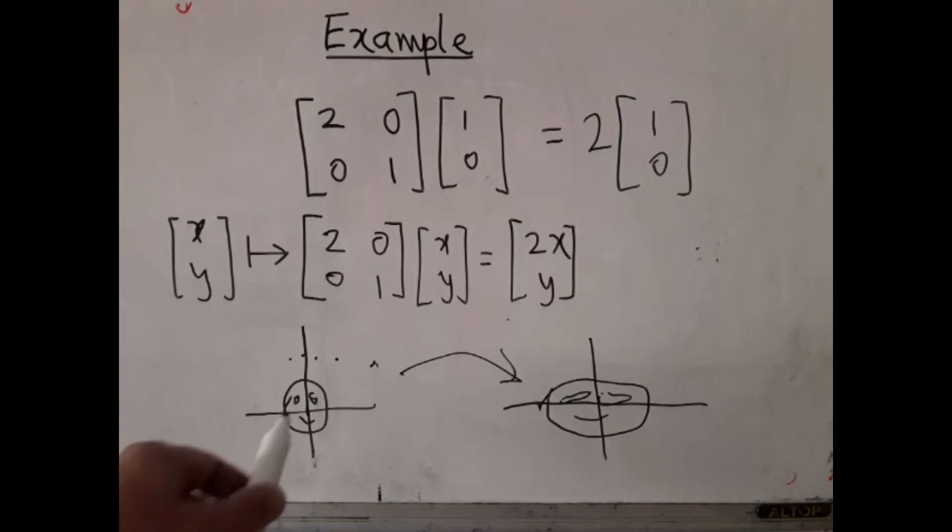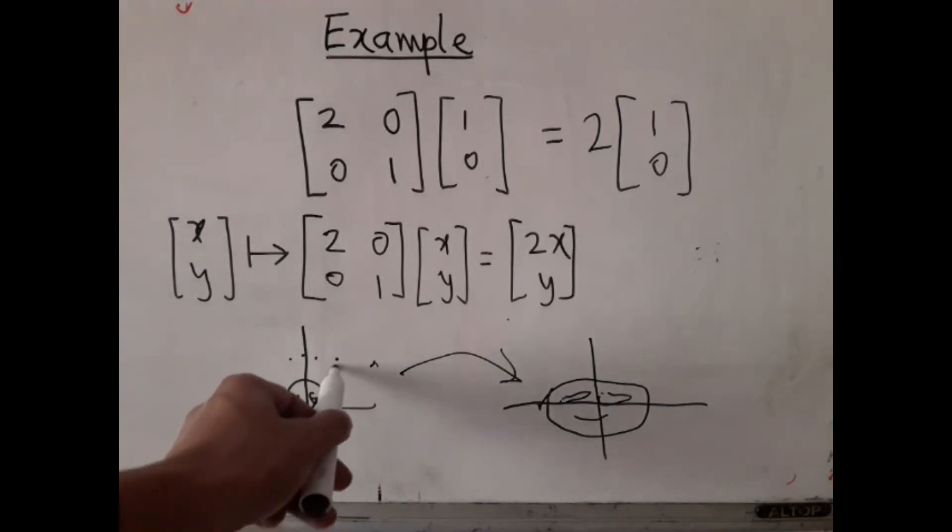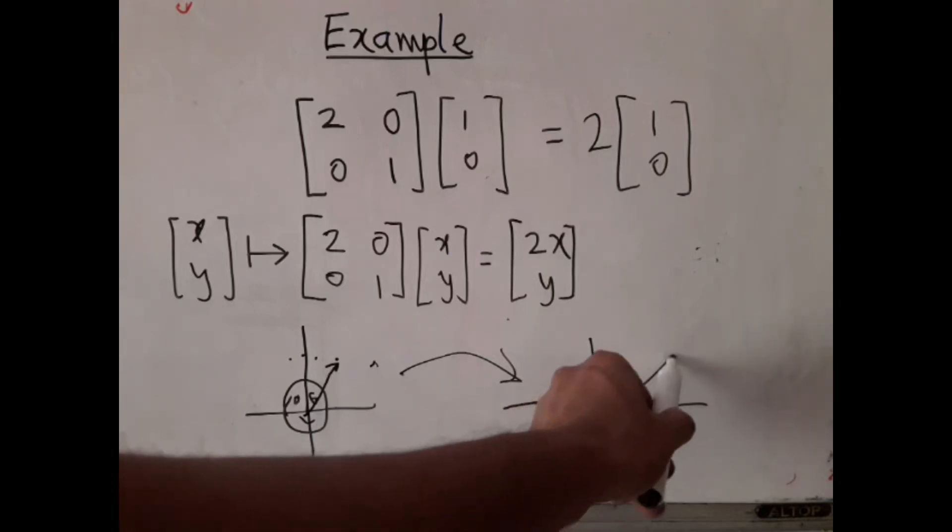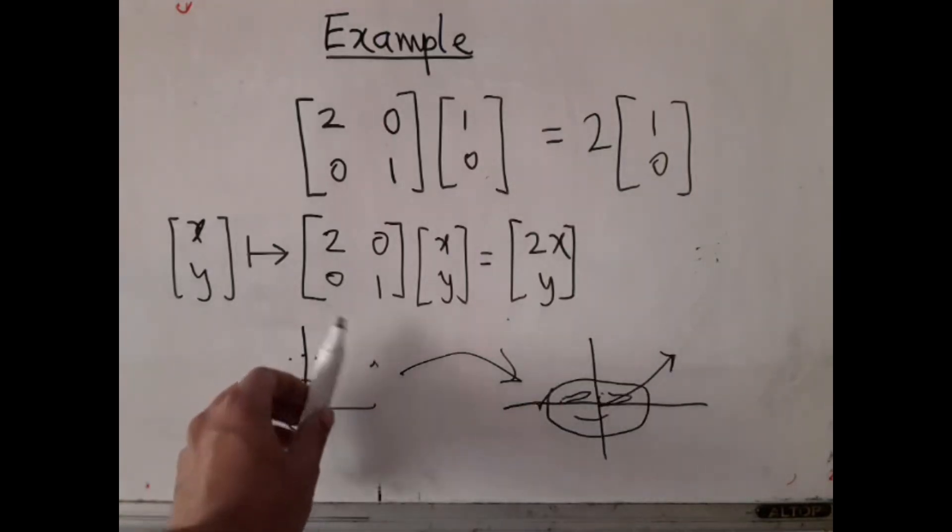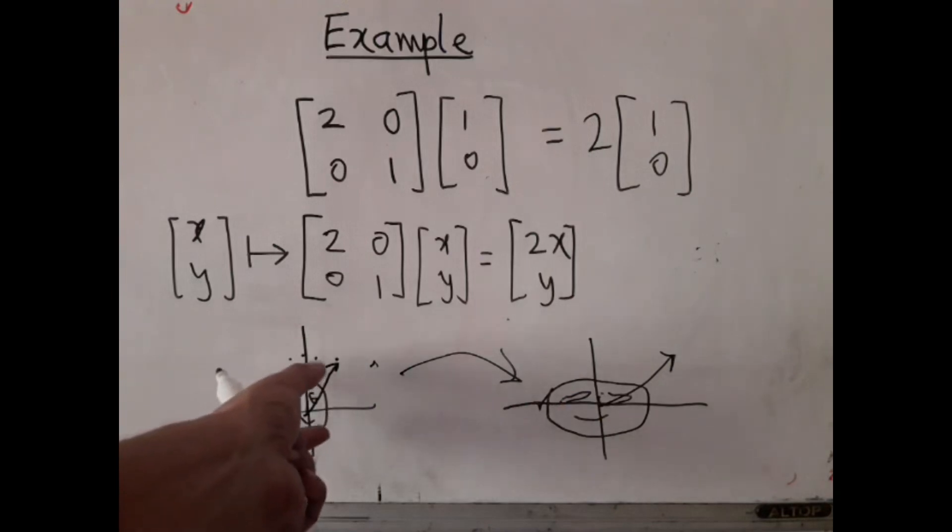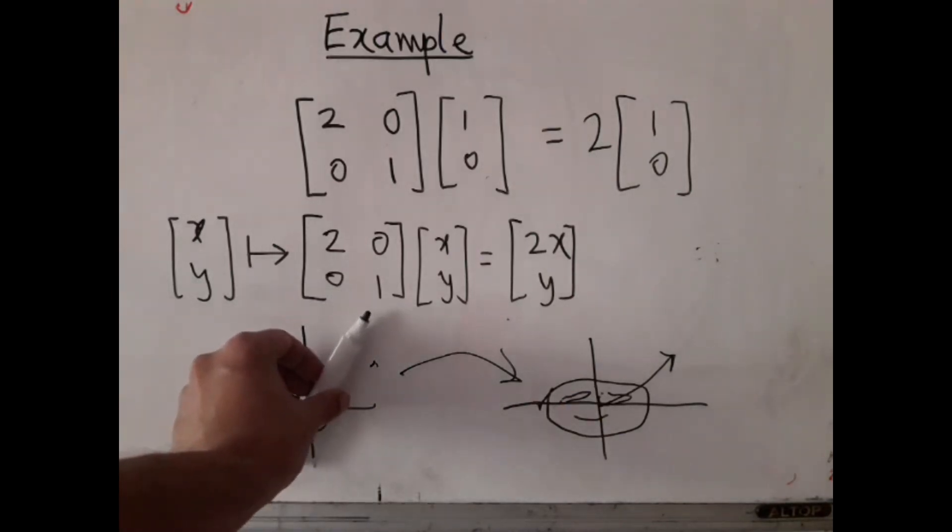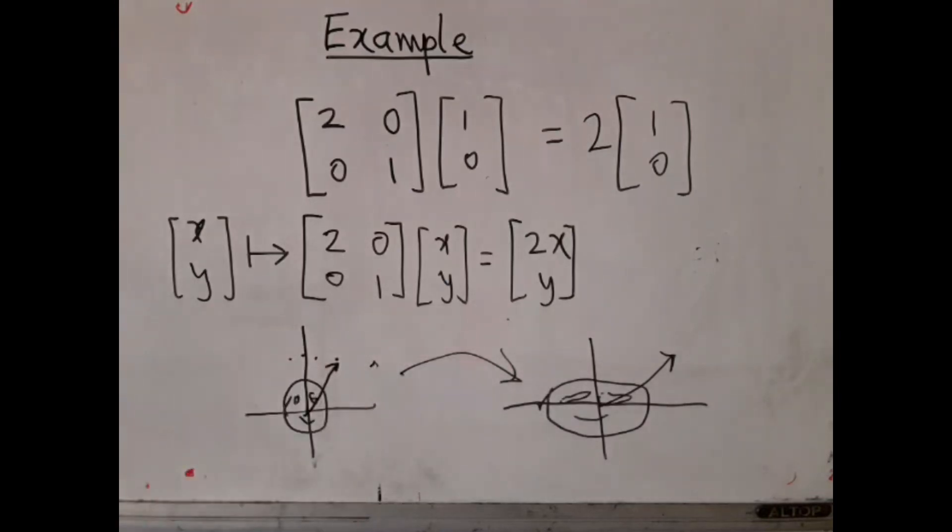Now, you can see that if I take a vector like this, in that case, that vector will move to this. So it moves away from the line. Because the Y part remains the same, but the X part widen. So the vector changes direction. If, on the other hand, you take this vector, it remains along the same direction, but just got stretched.